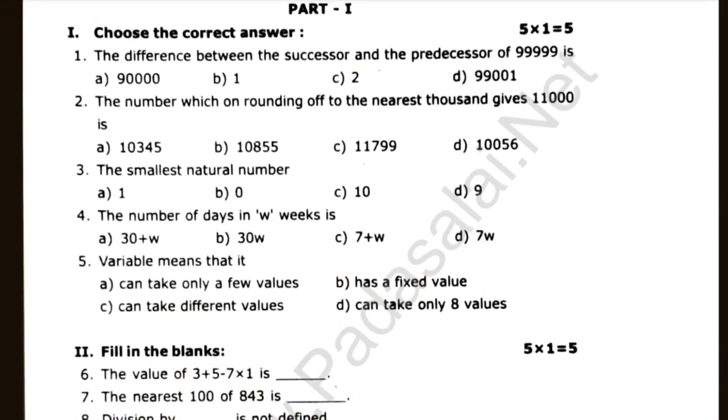Let's choose the difference between the successors and the prediction of 99999. 99999 is dash.